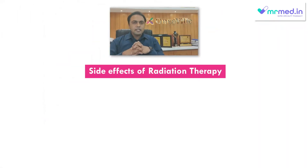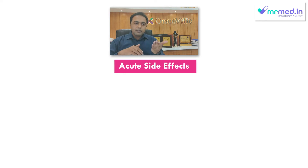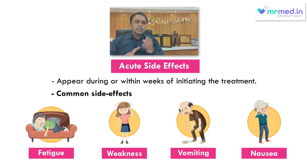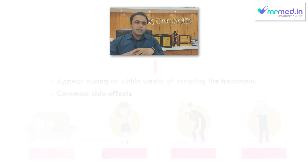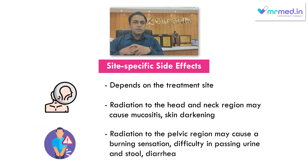Now, after discussing the types and intent of treatment, we will discuss the side effect profile of radiation. Side effects are normally classified into acute and late side effects. Acute side effects are those which happen during the treatment. The general side effects of radiation are fatigue, weakness, vomiting, and nausea. But the site-specific side effects depend on where we irradiate. For example, if we irradiate the head and neck area, the patient gets mucositis or skin reaction. If we irradiate the pelvic area, we get burning micturition, difficulty in passing urine, difficulty passing stools, and some amount of diarrhea. So these are the side effect profiles of radiotherapy.